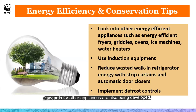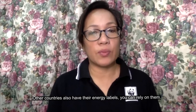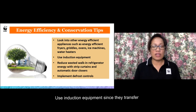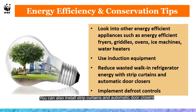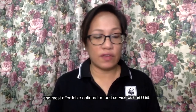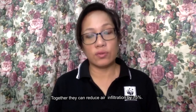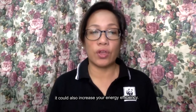Standards for other appliances are also being developed. Check labels and look for energy efficient appliances such as energy efficient fryers, ovens, ice machines, and water heaters. Other countries also have their own energy labels that you can rely on. Use induction equipment, since it transfers heat directly to cookware while the surrounding air stays cool. You can also install strip curtains and automatic door closers along your walk-in refrigerator to reduce wasted energy — these are among the easiest and most affordable options for food service businesses, and together they can reduce air infiltration by 75%. Coupling that with defrost controls further increases energy efficiency.